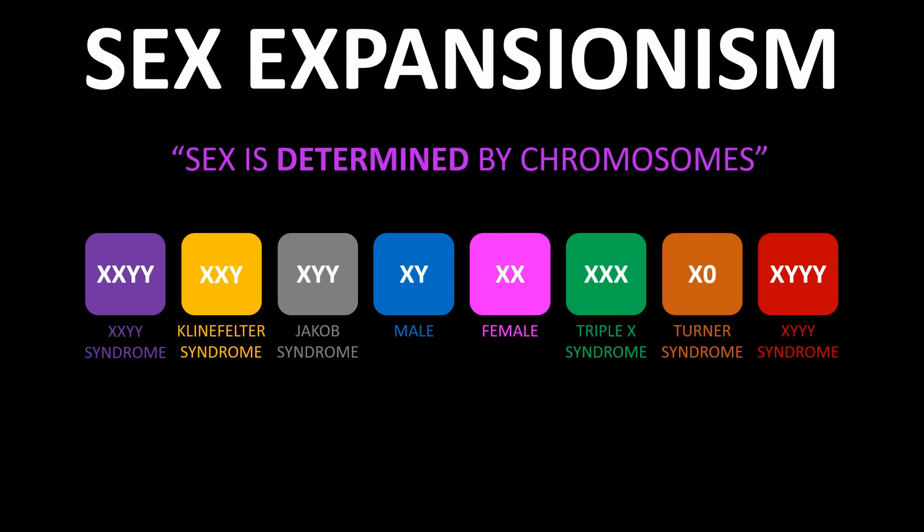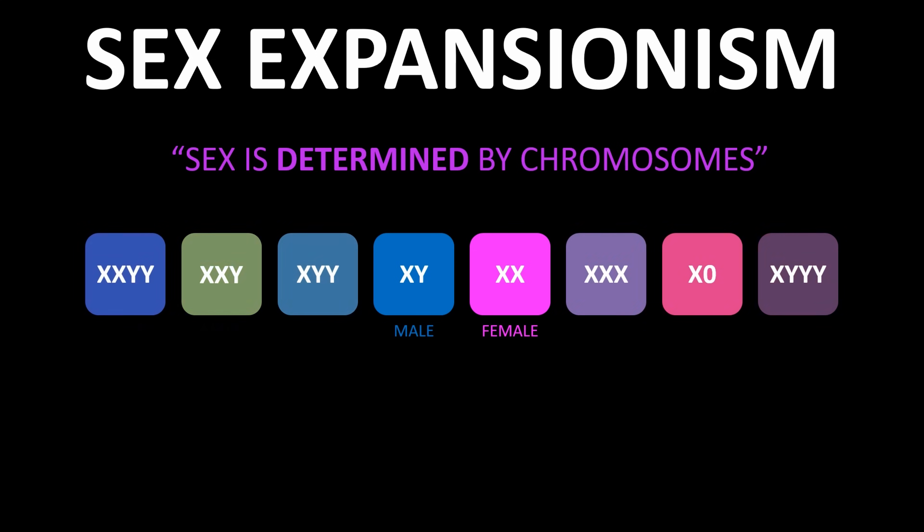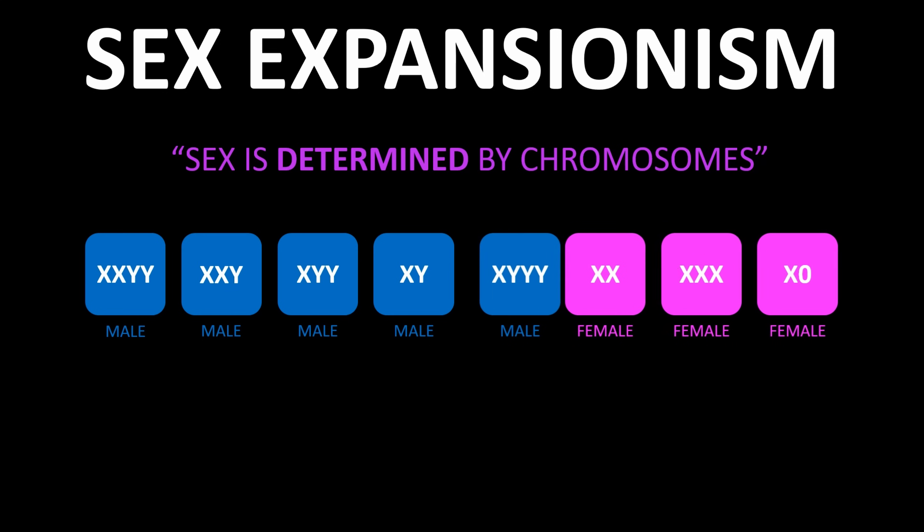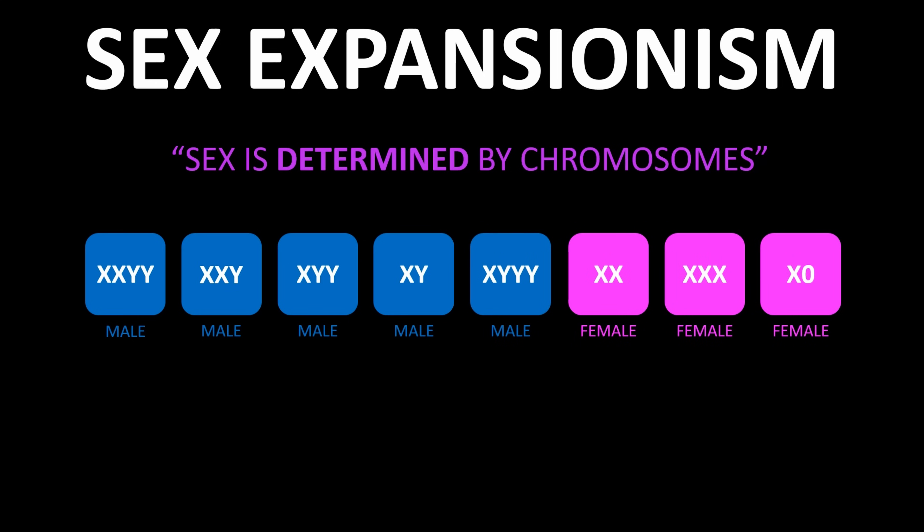Armed with that knowledge, we can reclassify what they would posit as multiple sexes. We can see that they're actually just composed of two sexes — males and females. They're trying to conflate sex determining systems or sex chromosomes with outcomes. But those are just different chromosomal compositions within the male and female category.